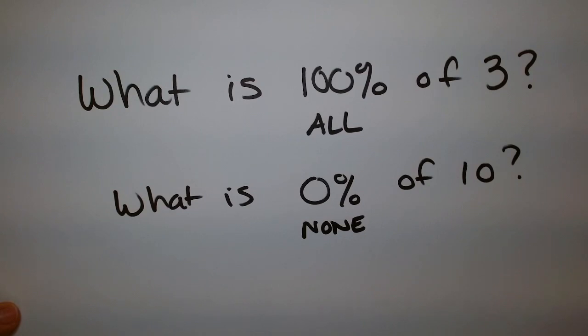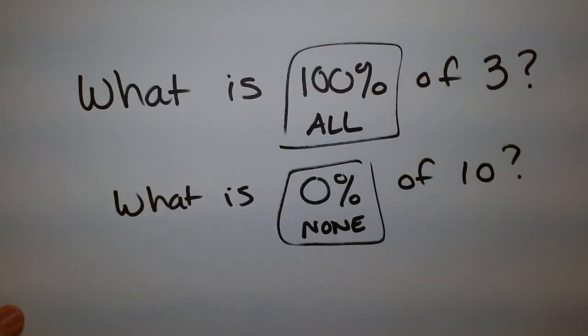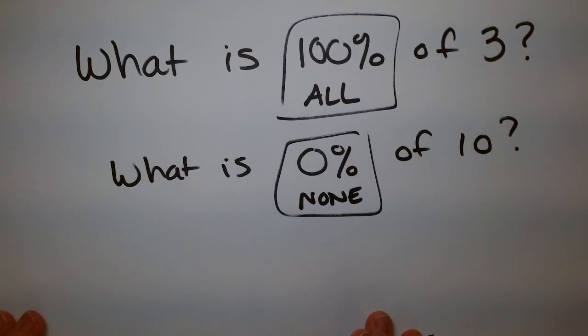So 100% means all of it. 0% means none. So we have the ends of the spectrum here. Now, how do we deal with all the stuff in the middle? What if I said,